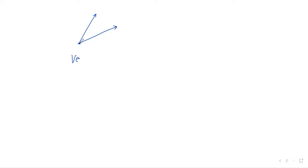So angles have three parts essentially. There are two rays meeting at a point — so that's one ray, another ray, and a point. Three parts in all. The point is called the vertex.